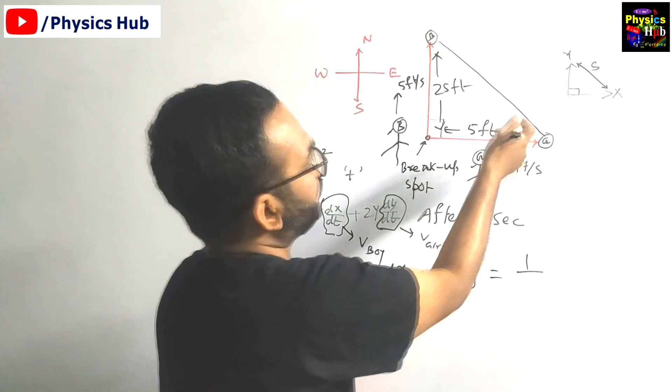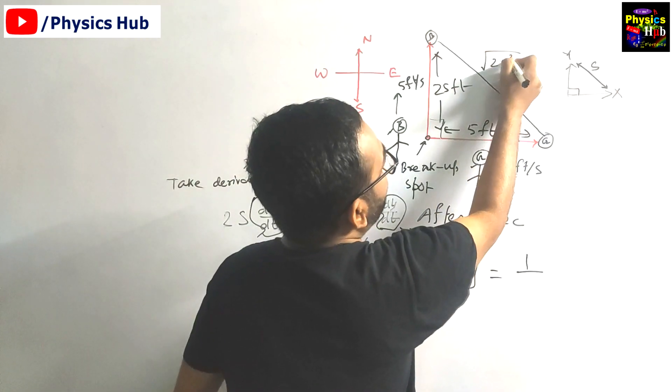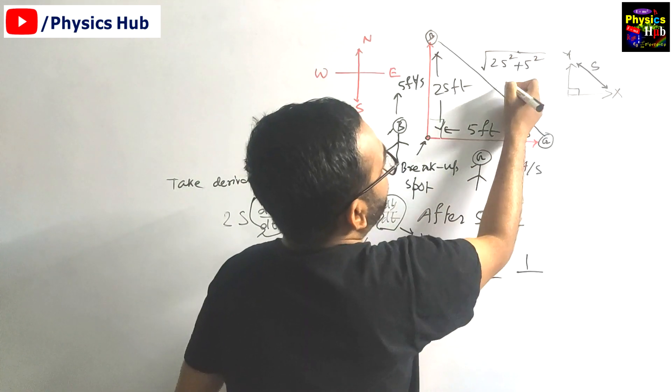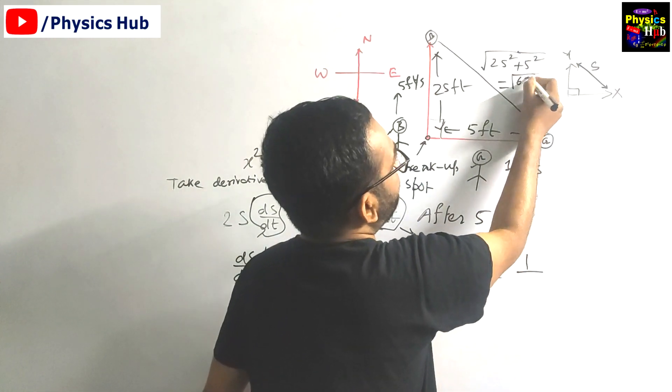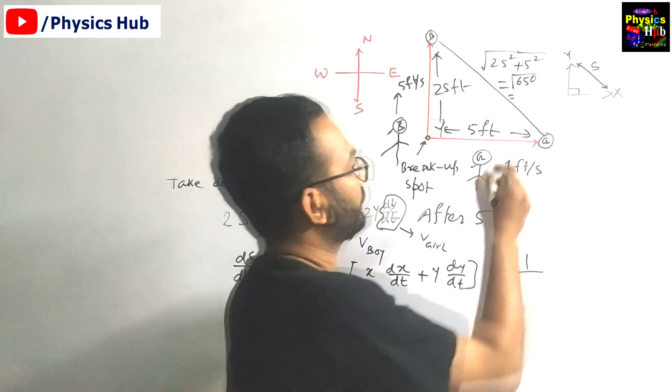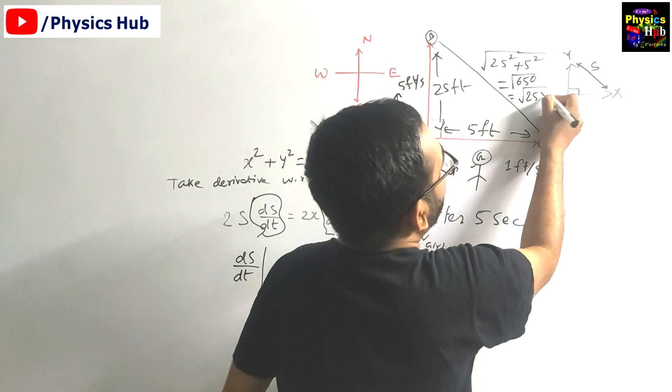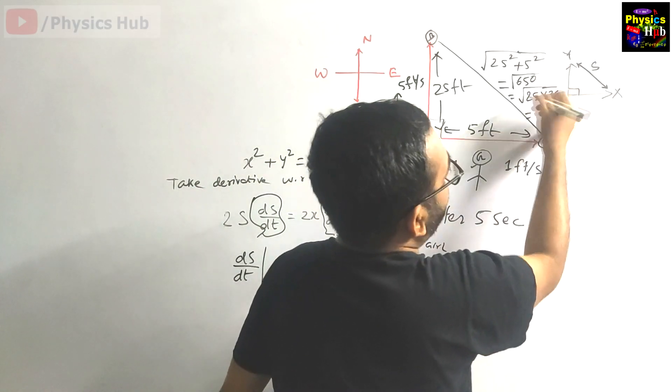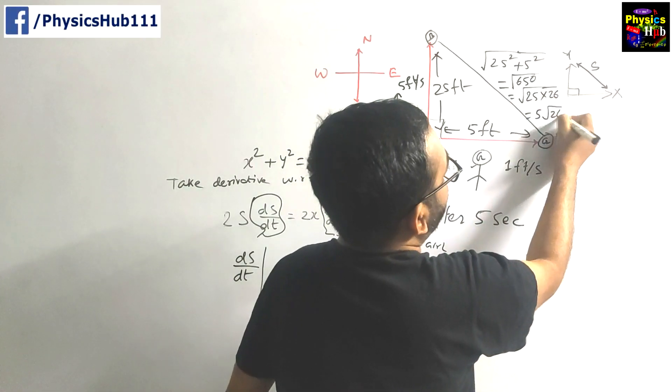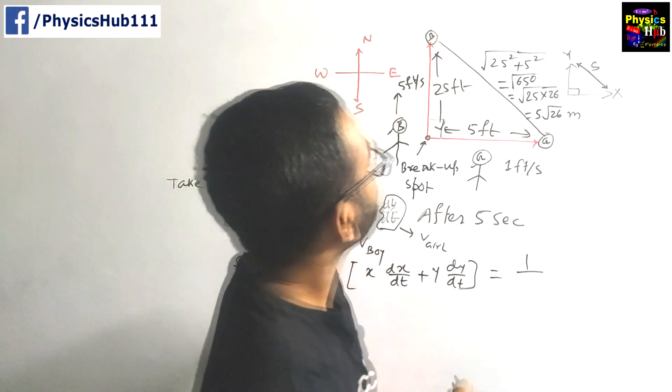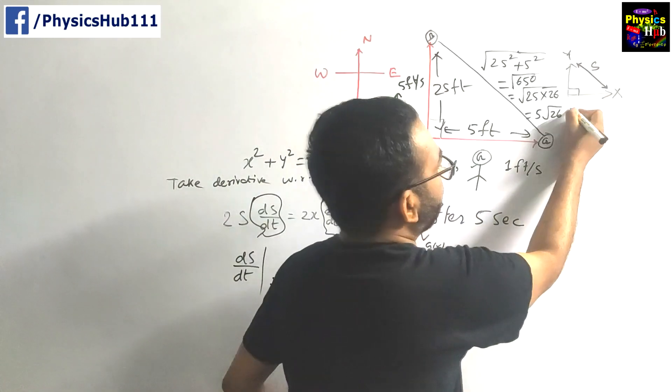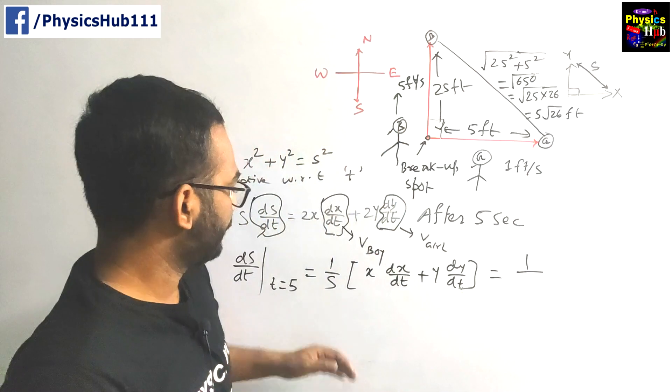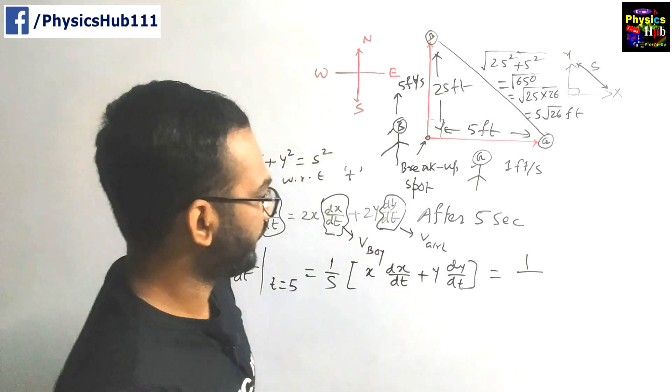This will be 25 feet, this is 5 feet. And this will be √(25² + 5²), which means √(625 + 25) = √650. We can write it as √(25 × 26), so 5 comes out, giving 5√26 feet.